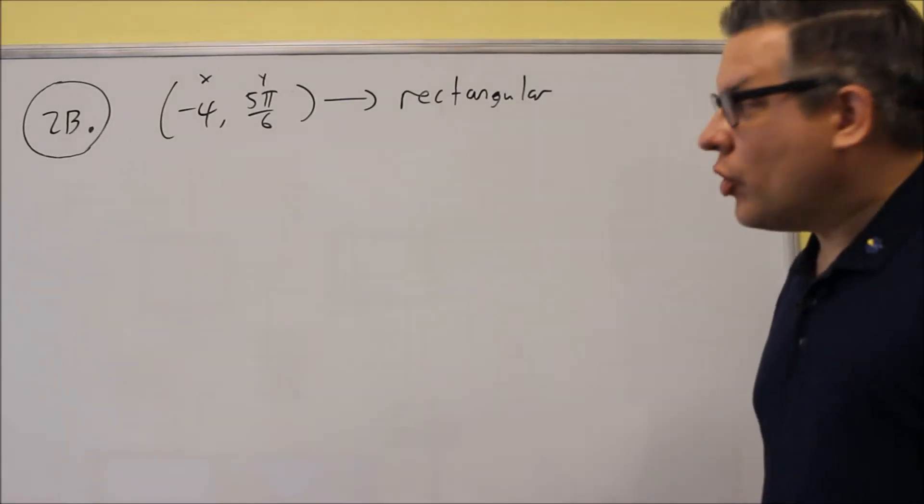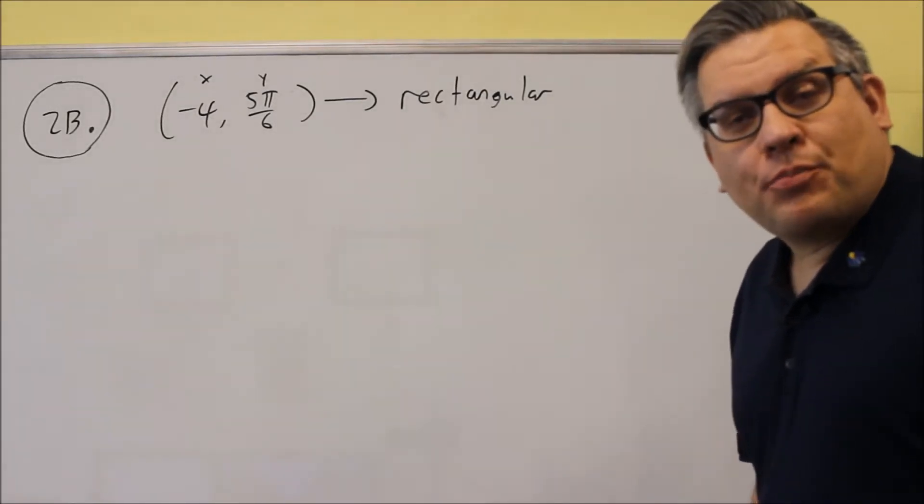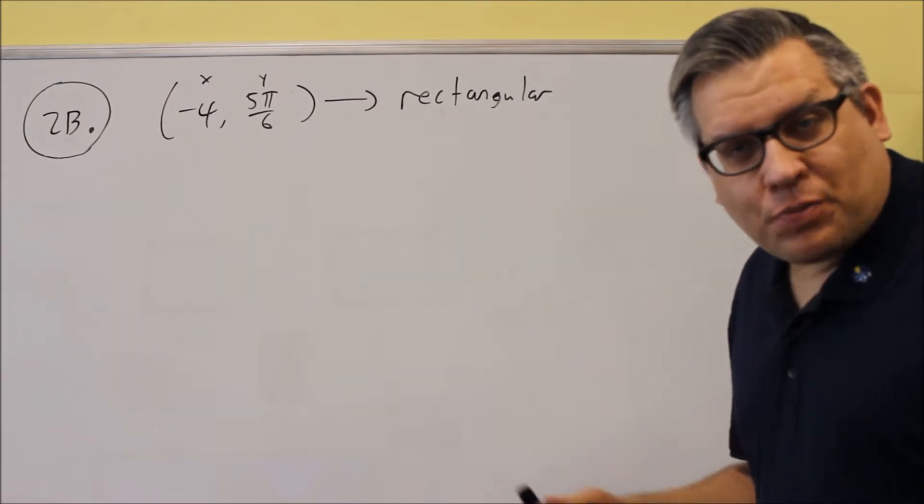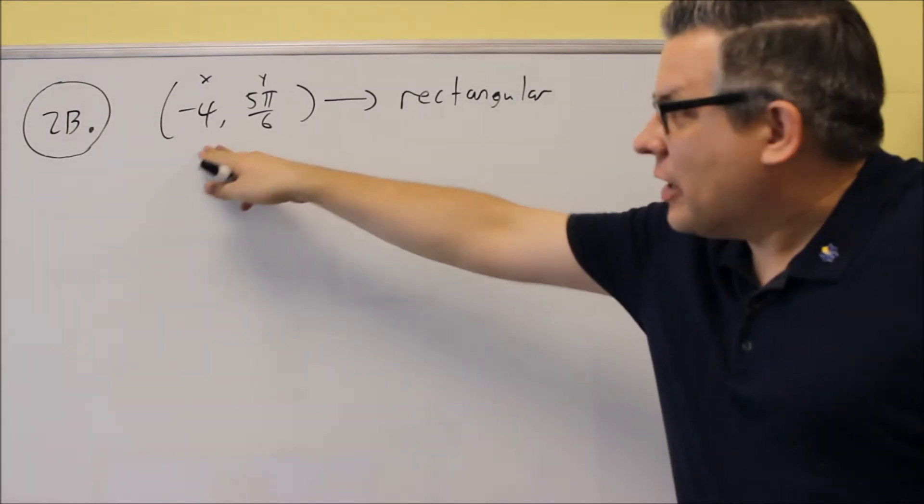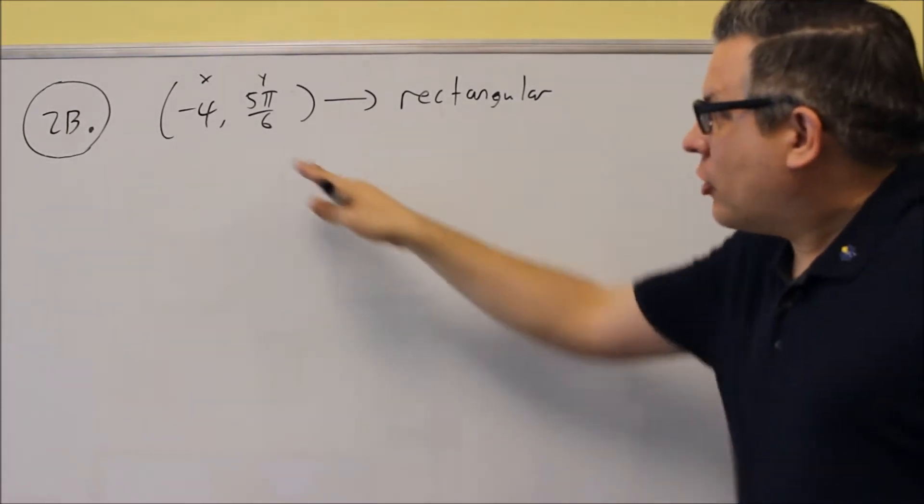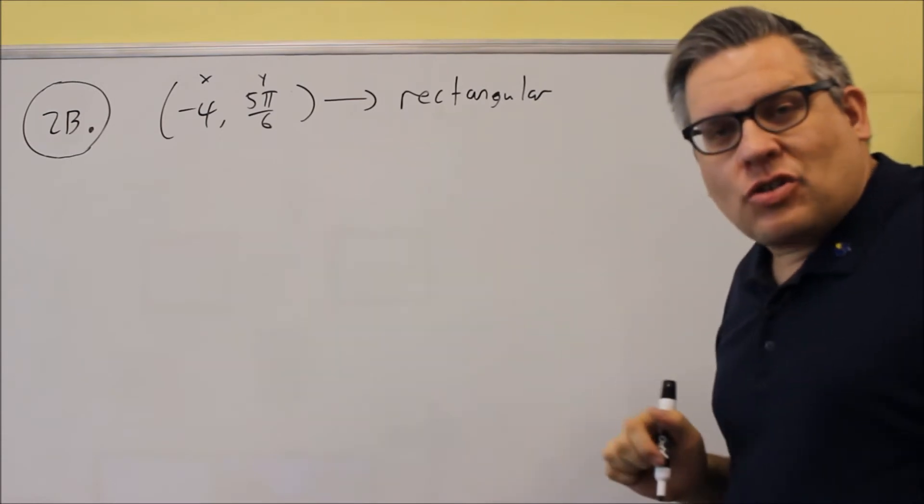Okay, for 2b, we're going from polar into rectangular. So again, you know it's polar because there's an r and a theta that's there. You're converting it over into an x and a y.